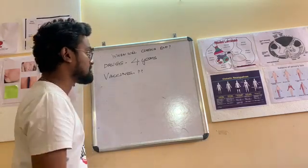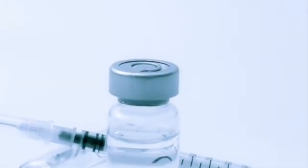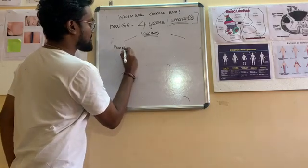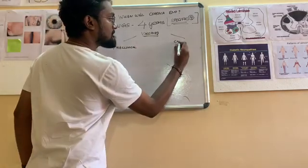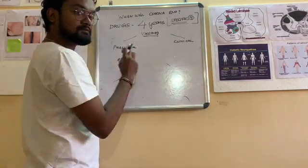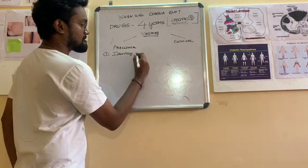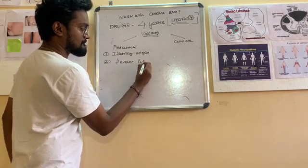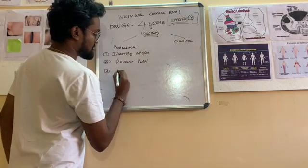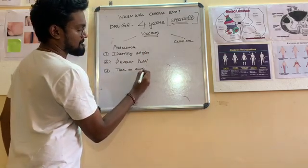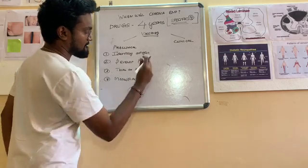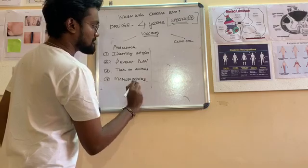Now for the vaccines. Vaccines actually play the most important part of curing this viral pandemic. Let's see how a vaccine gets developed. It gets developed in two stages: pre-clinical and clinical stage. Pre-clinical: first one is to identify the antigen that can be used to develop the vaccine. Then develop a plan. Third one is the most important part where we go into trial on animals. Fourth one, we recognize how to manufacture this. This might take around one year.